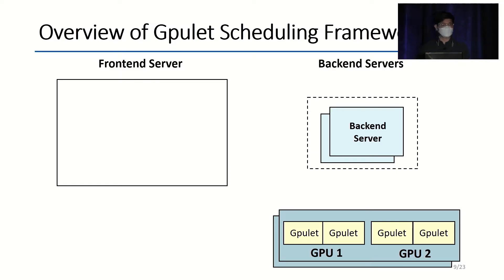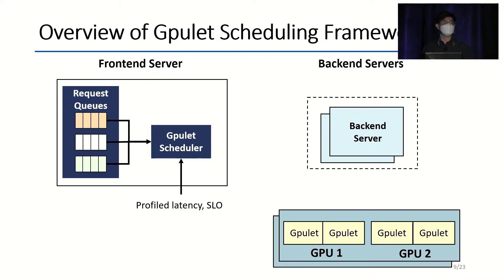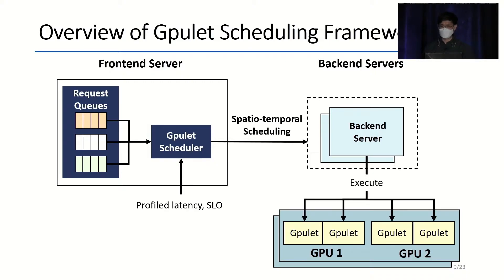I've introduced the problem our research tackles. Now I'll focus on the solution itself — the overview of our proposed GPU-LED scheduling framework. We have a front-end server that controls multiple back-end servers, each responsible for a physical server with multiple GPUs allocated with GPU-LEDs. The front-end server maintains a request queue for each model. For each scheduling period, the incoming rate is monitored and sent to the GPU-LED scheduler. The scheduler performs spatial-temporal scheduling using profile information such as latency per batch size. The results are sent to each back-end server, which then executes them.